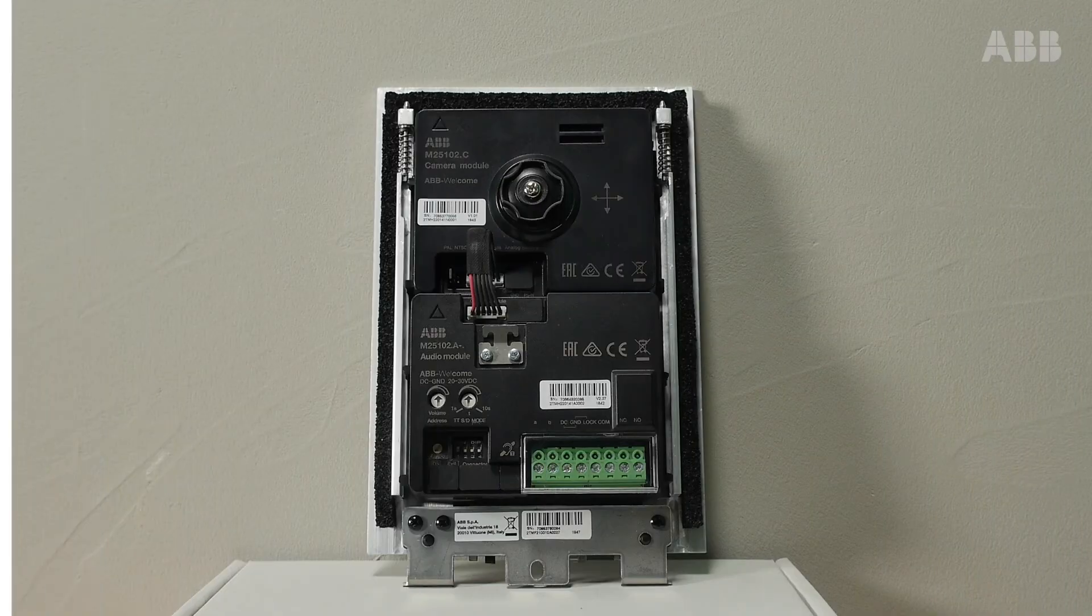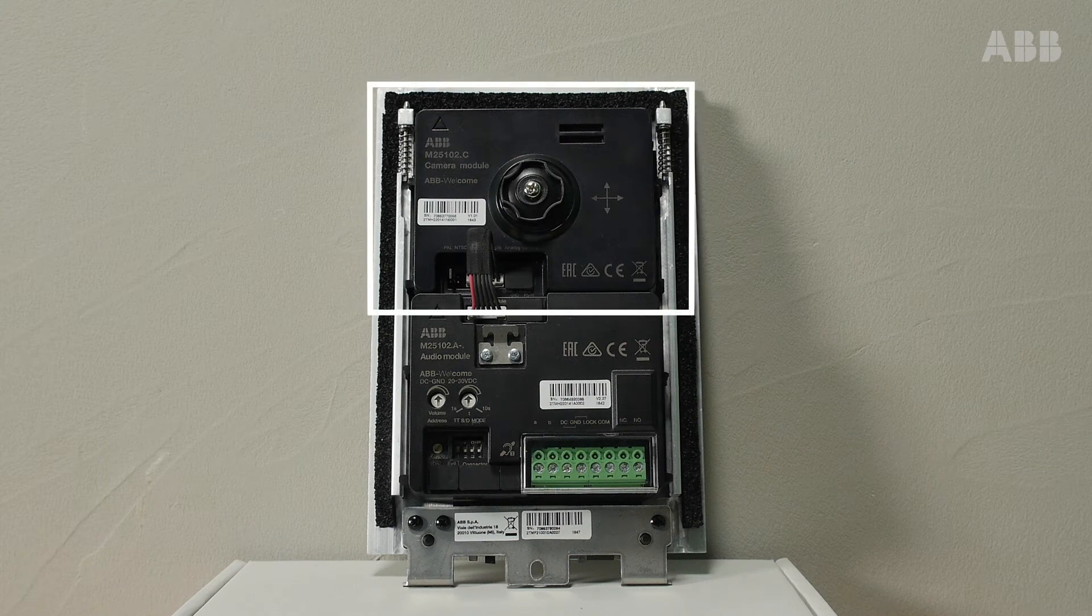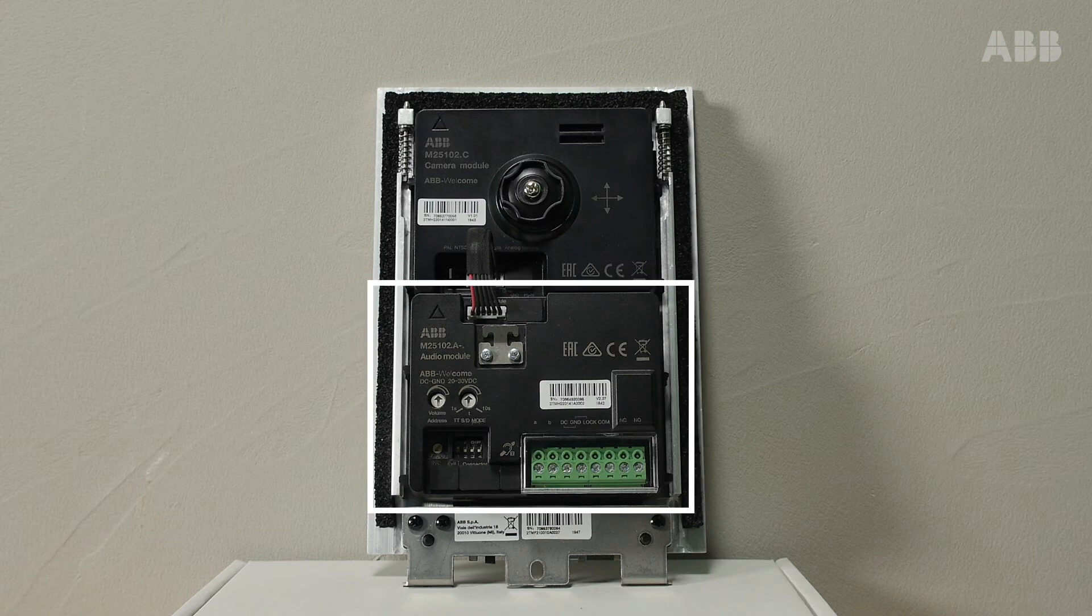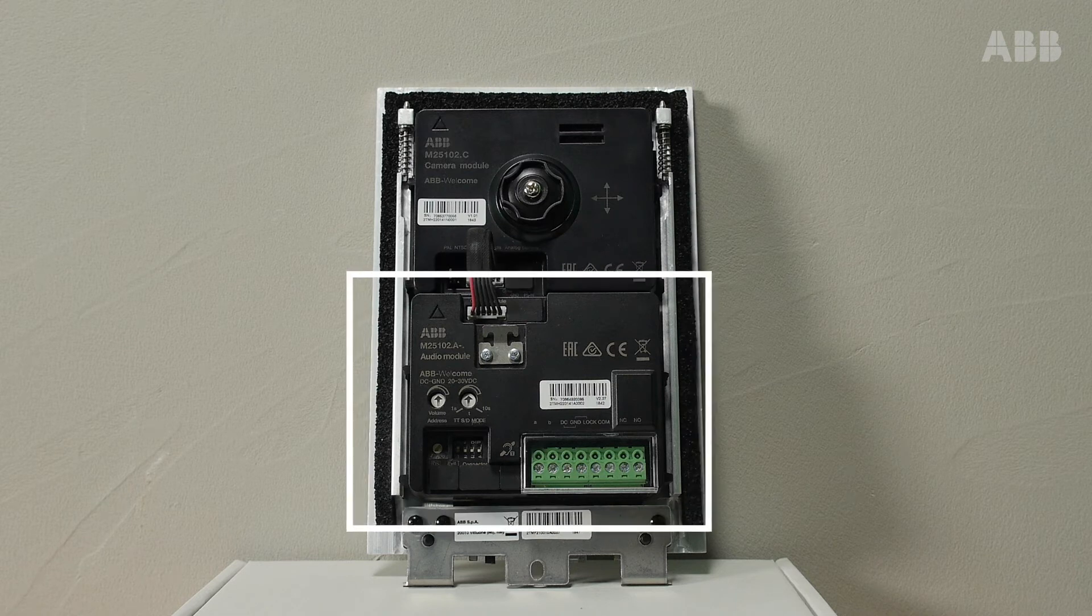The outdoor station comprises two modules, the camera module and the audio module. The audio module is the real nerve center of the system.